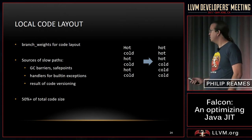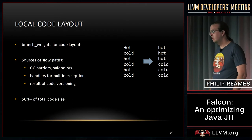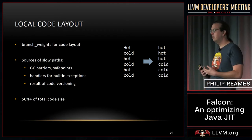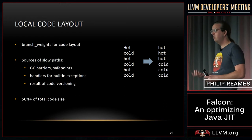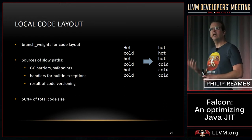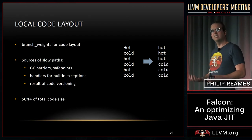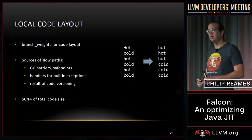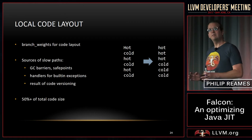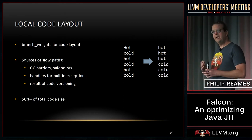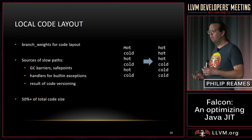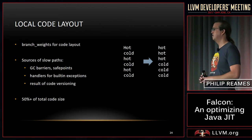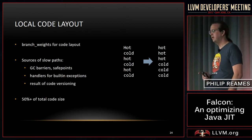We leverage the existing LLVM infrastructure for code layout using the branch weights metadata and block placement infrastructure, which pushes all the cold code in the function to the end. This is particularly important for us because of how many cold paths we have. In Java we have slow paths for all of the safepoint handling code and slow paths for all of the built-in exception types — range checks, null checks, all of those things. Additionally, our pass pipeline makes very heavy use of code versioning to eliminate some of those checks. The net effect is we have a lot of cold code — in fact, over 50% of our total code size is those slow paths.